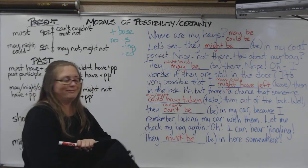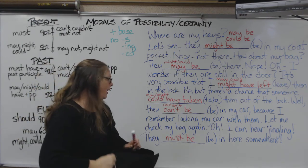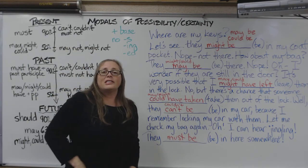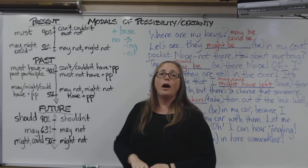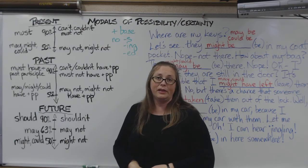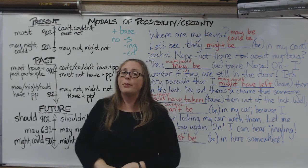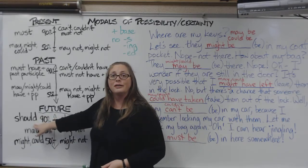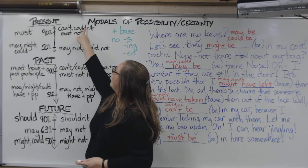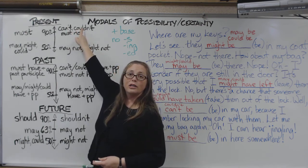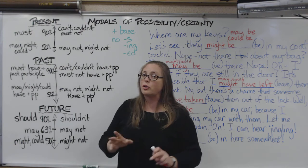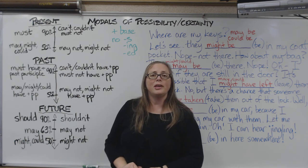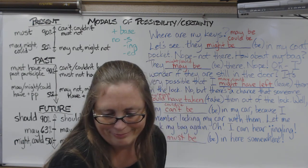And they are — here they are! So hopefully that gives you an idea about these modals of degrees of certainty and degrees of possibility. Keep using them, and remember especially the ideas of 'must' and 'should,' and the difference in the negative — can't and couldn't versus the affirmative 'could.' Those are the ones that people get tripped up on, so try to remember those tricky ones. Thank you.